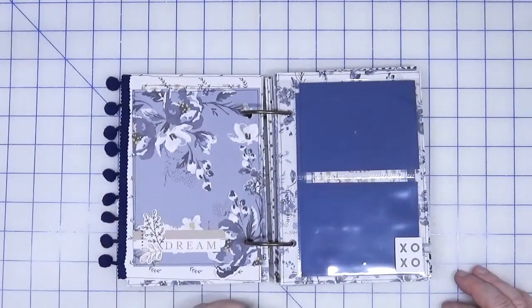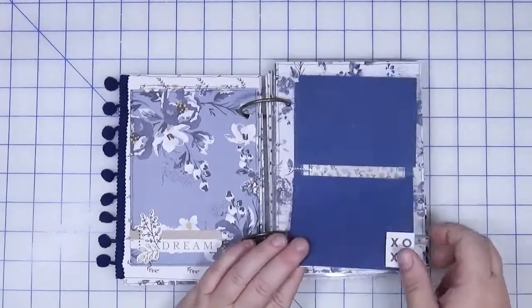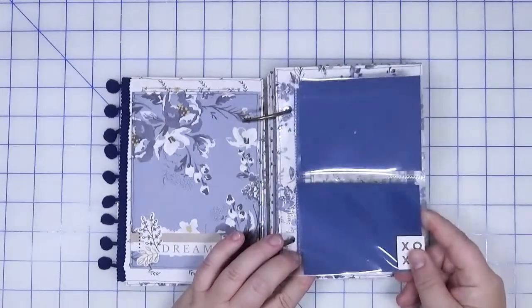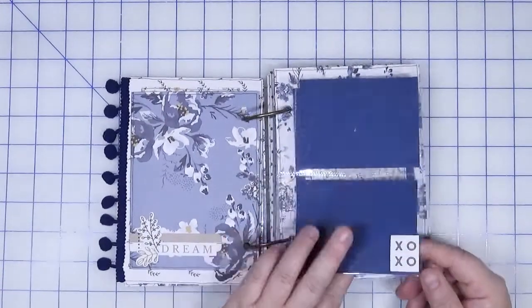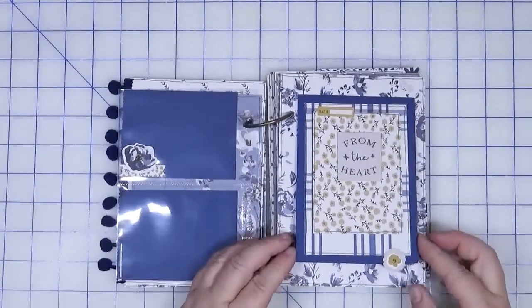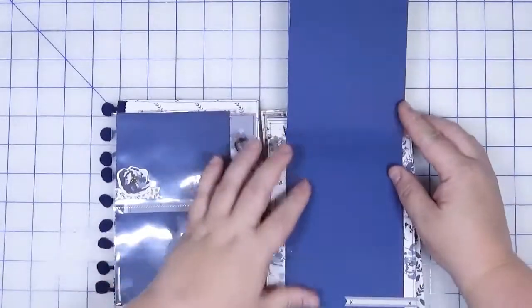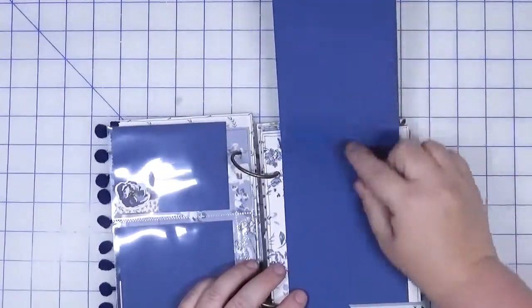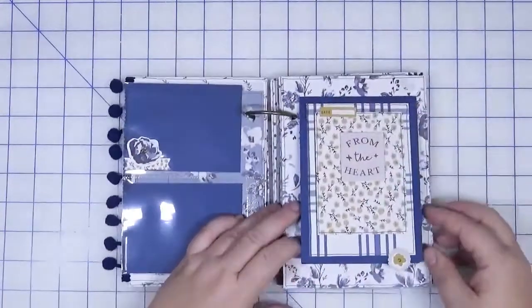We have another pocket page. This is one with two three by fours, and then of course you've got the same on the opposite side. Here's another flip up, only this time it goes this way. So again, lots of space for photos and journaling.